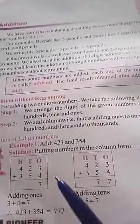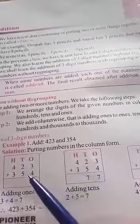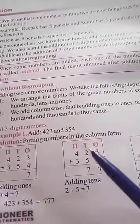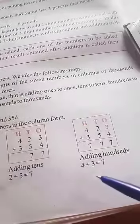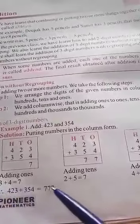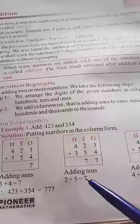Example: ones, tens, hundreds. 234 plus 543 equals 777. Adding ones: 3 plus 4 equals 7. Adding tens: 2 plus 5 equals 7. Adding hundreds: 4 plus 3 equals 7. Total: 777.